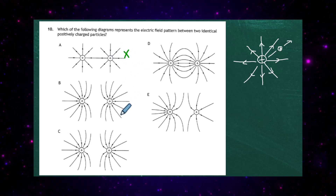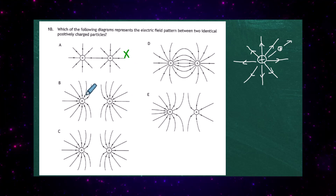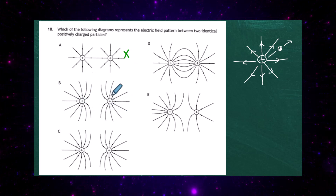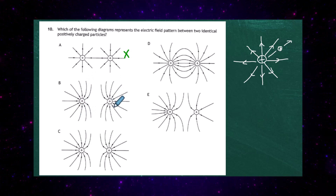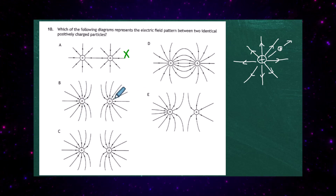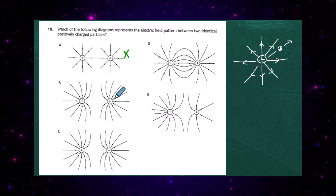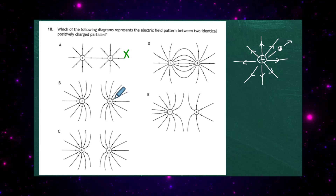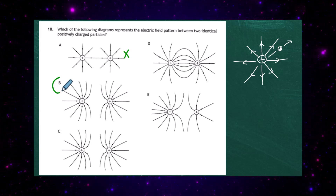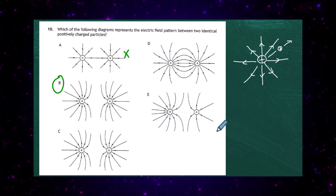Part B is the correct one, because all the field lines are pointing away from both positive charges. There seems to be an area in between where you can intuitively see the two positive charges repelling each other. So B appears to be the correct answer.